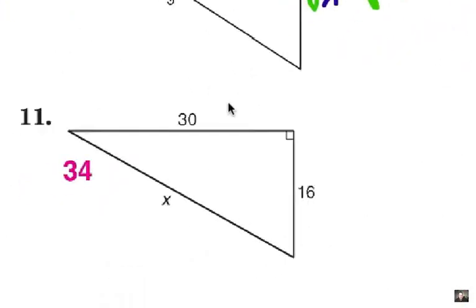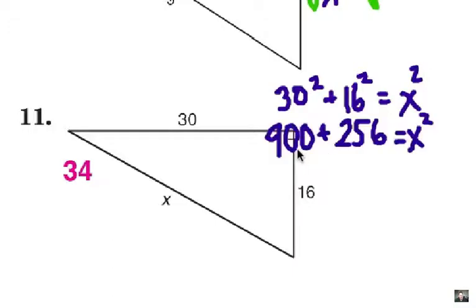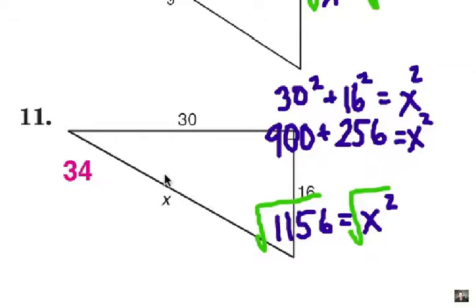On number 11, I hope that you tried it. We have 30 as a leg and 16 as a leg. So we've got 30 squared plus 16 squared equals the hypotenuse which is X squared. Let's multiply those out, which is 900 and 256. We add those together to get 1156 equals X squared. Now we take the square root of each side. And the answer is exactly 34. The square root of 1156 is 34.